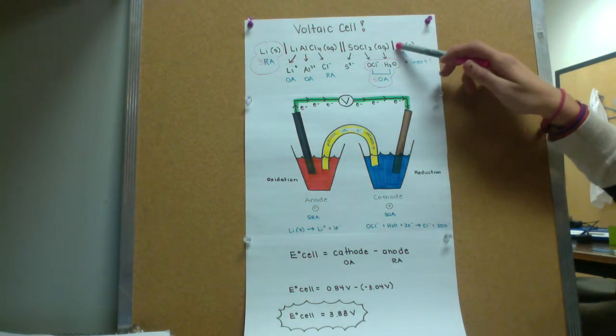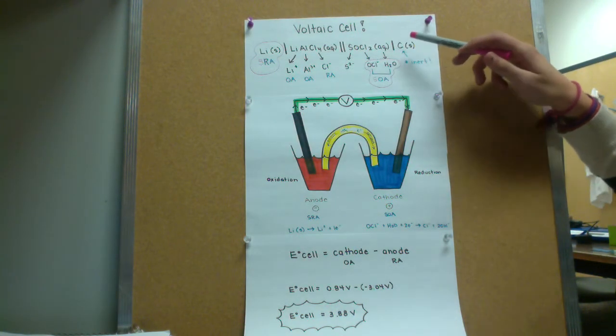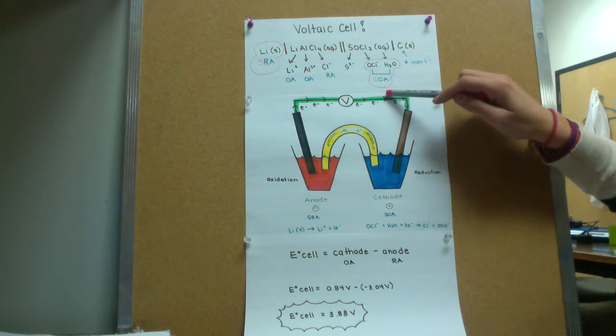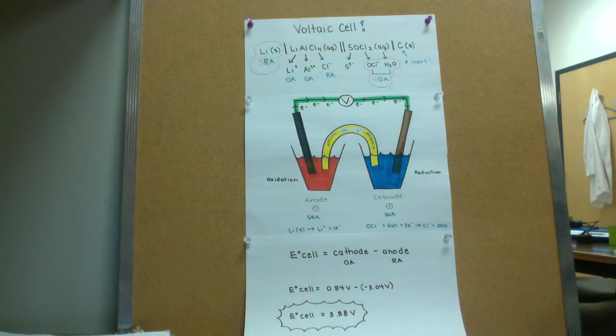On the other side, in the other cup in the voltaic cell, we have the hypochlorite ion reacting with water as our strongest oxidizing agent. From there, we can label our diagram for our voltaic cell.